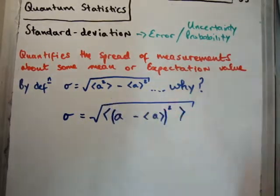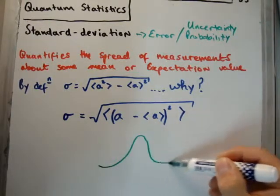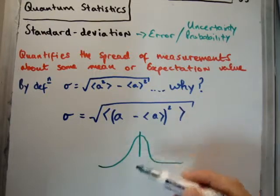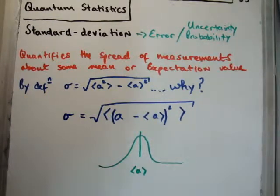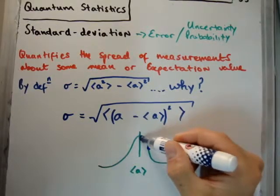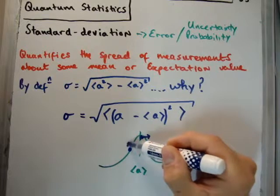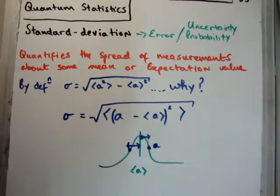Now, this hopefully makes a bit more sense, because if you look at the term in the middle, let's say we have some sort of a Gaussian distribution. And our Gaussian distribution is centered around the average of A. So, what this A minus the average of A quantifies, let's say we have this is our value of A, it quantifies how far you are away from the average. Or maybe you're over here. It quantifies how far you are away from the average value.